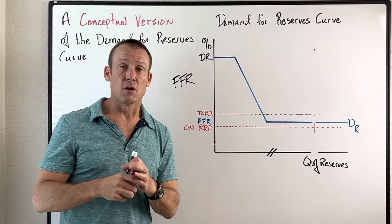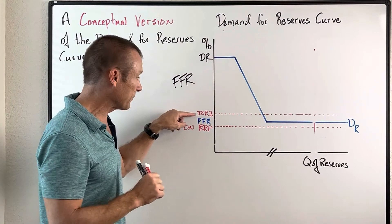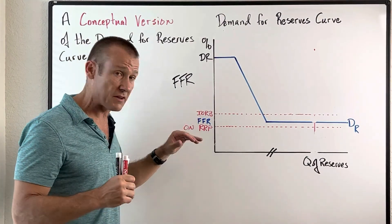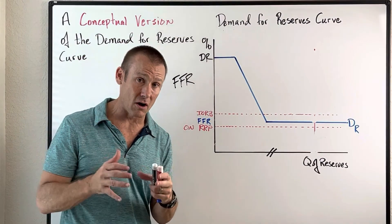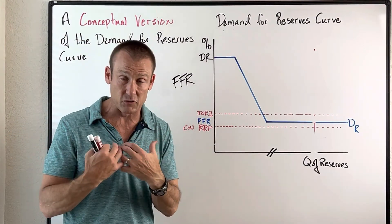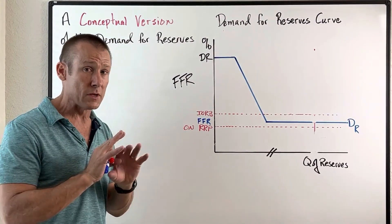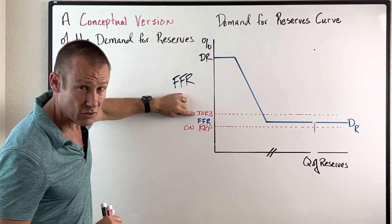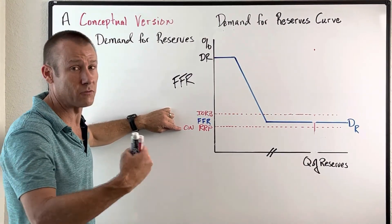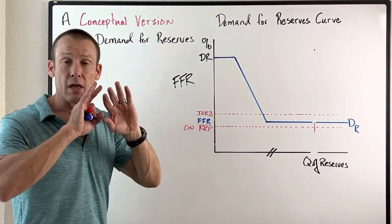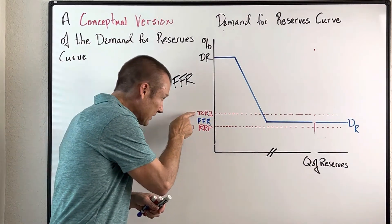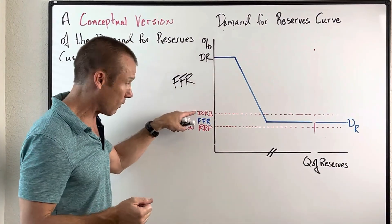Here comes the confusion. When you start reading about this, you will be properly told that the interest rate on reserve balances is a reservation rate, which makes it a floor — the interest rate on reserve balances is a floor for the federal funds rate. The problem is it is a soft floor. It's very confusing when you hear it's a floor and then you see it written above the federal funds rate. It almost looks like the interest rate on reserve balances is acting as a ceiling, and the overnight reverse repurchase agreement rate is setting the floor — but that's not the case.